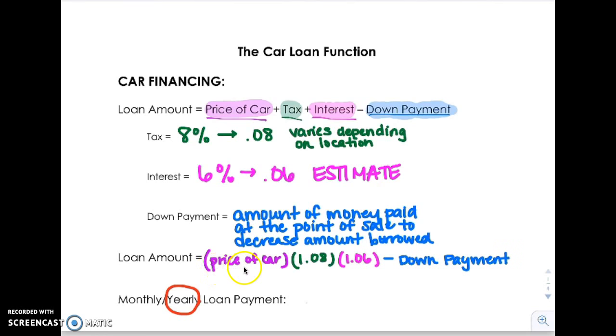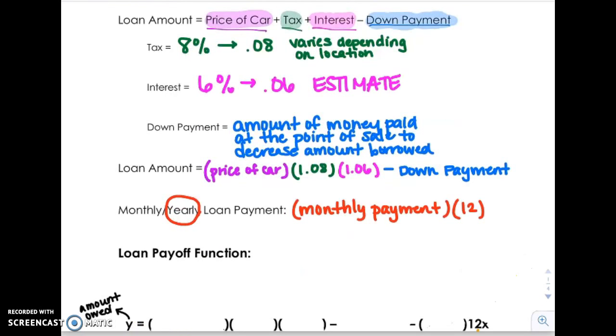So here is where our equation for your car loan comes from. We take the price of the car, multiply that by 1.08. Doing that automatically adds on your 8% tax onto the price of your car without having to add it back. Then you multiply 1.06 by that because again, that's going to add the interest on automatically. And then you simply have to subtract your down payment. That's what we have here is the loan amount, so that's how much you borrow.